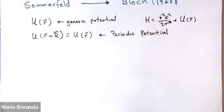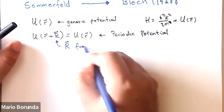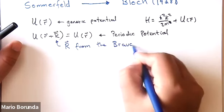The potential is periodic through this term — the little r is position, and R from the Bravais lattice tells you about the periodicity in the system.